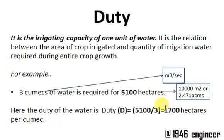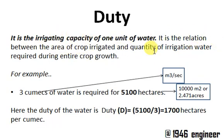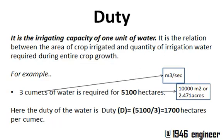This 1700 hectares is known as the duty of one cumec of water in that area. Duty gives the relation between the area of the crop irrigated and the quantity of water required during the entire crop growth. Here, cumec means cubic meters per second and one hectare is 10,000 square meters.